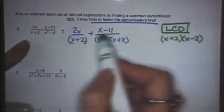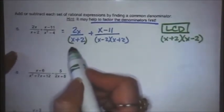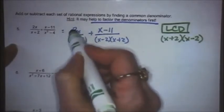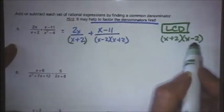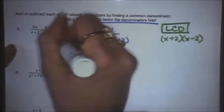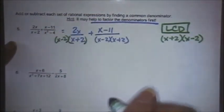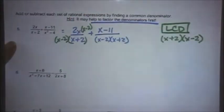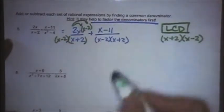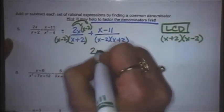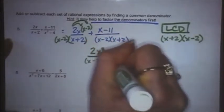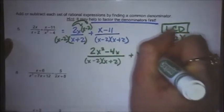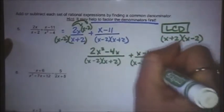So this is what every fraction is going to have to have on the bottom. Now I just go back to my rational expressions and figure out what pieces I might be missing. This fraction only has the x plus 2 on the bottom, so I need to make sure it has this second piece. So I'm going to multiply the bottom by x minus 2. Now remember with fractions, if you do something to the bottom, you must also do it to the top. Since the second fraction already had the LCD, it didn't have to change.